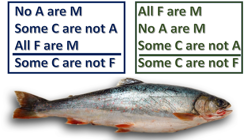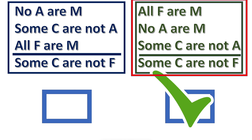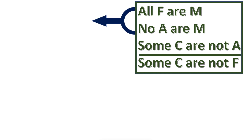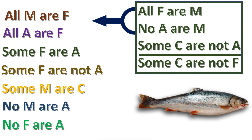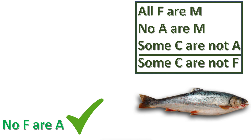Next practice problem. Choose the sorites that is in standard form. Press pause if you need more time. The answer will appear in 3, 2, 1. This one is in standard form. Next, for the first two premises, what conclusion is implied? Press pause if you need more time. The answer will appear in 3, 2, 1. This conclusion follows.